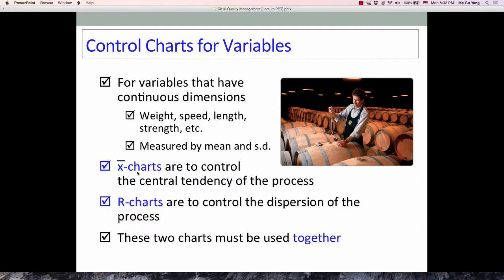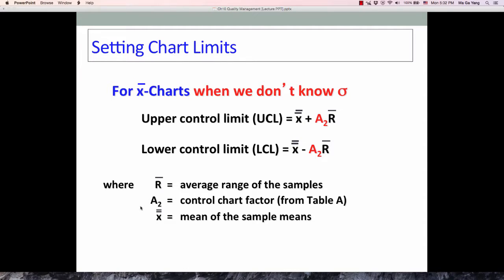There are two situations: when we know the standard deviation sigma, or when we do not know the standard deviation. Most cases we do not know standard deviation. Assuming we do not know standard deviation, we use this formula for upper and lower control limits for X-bar chart: sample mean plus A₂ times R-bar, and the lower control limit equals the sample mean minus A₂ times the average range of samples.